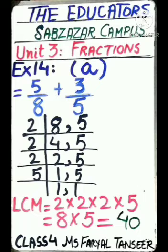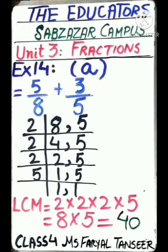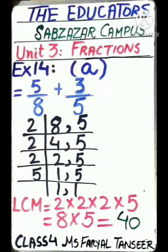For LCM of 8 and 5, we start with the 2 times table: 8÷2=4, 5 stays → 4, 5. Again: 4÷2=2, 5 stays → 2, 5. Again: 2÷2=1, 5 stays → 1, 5. Then 5÷5=1 → 1, 1. So LCM = 2 × 2 × 2 × 5. We multiplied 2 three times, giving 8, and 8×5=40. LCM = 40.